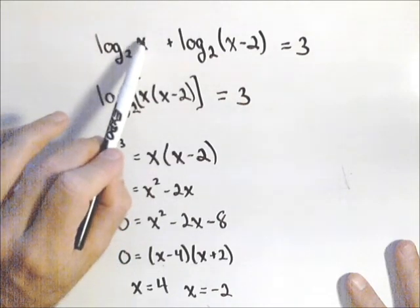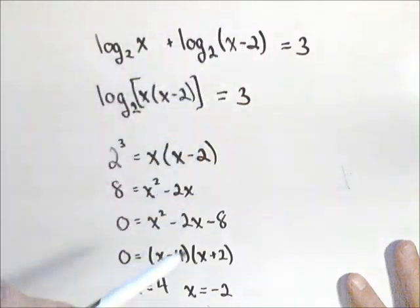So x equals four, that's okay. And four minus two is two, that's okay. So that checks out.